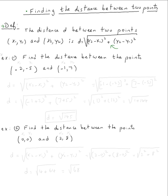Let's do example one. Find the distance d between the points (-2, -5) and (-1, 7). I'm going to call the first one x1, y1 — though it doesn't matter which is x1, y1 — and I'm going to call the second one x2, y2.